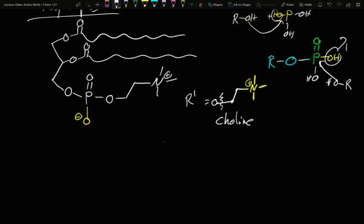A few other R groups. You can also have two carbons and then NH3+. This is ethanolamine. This is more subject to acidity. If you're in a very basic environment, you can lose one of those hydrogens, the nitrogen becomes neutral, where the choline doesn't have that option.